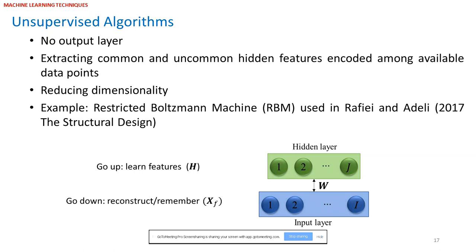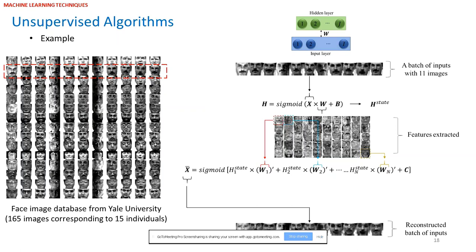The goal is to train the model such that if we input a data point, it extracts uncommon features into the hidden layer using common features embedded in the weight connections. When we reconstruct the input layer using the transpose of the weight connections, the reconstruction needs to be very similar to the actual input — mimicking the way the brain remembers a face or sound. If the size j of the hidden layer is less than the size of the input data, the hidden layer will be a lower-dimensional representation. In face recognition, these uncommon features appear as edges and pedestals of the images.